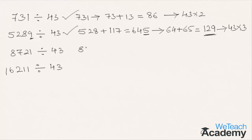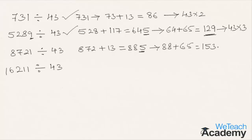The next example is 8721. Adding 13 times the last digit (1) to 872 gives 872 plus 13, which equals 885. Repeating: 88 plus 5 times 13 gives 88 plus 65, which equals 153. Repeating again: 15 plus 3 times 13 gives 15 plus 39, which equals 54. Since 54 is not divisible by 43, the given number 8721 is not divisible by 43.